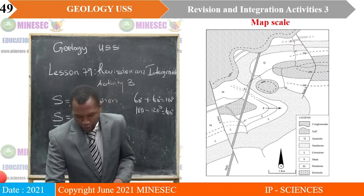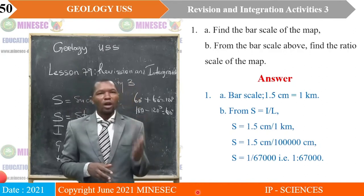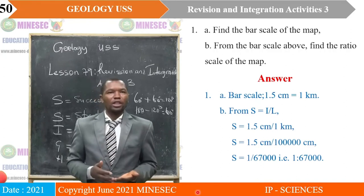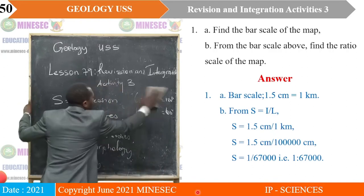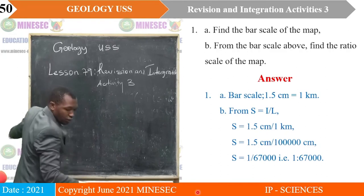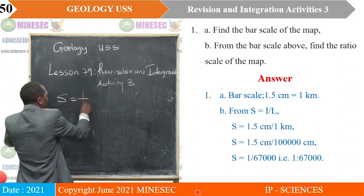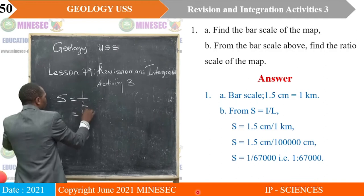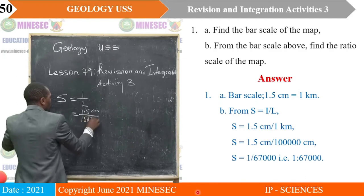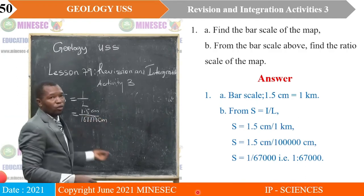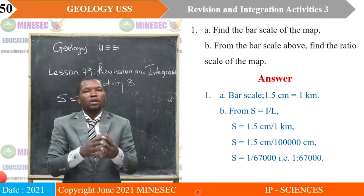From that map, going to the map scale, we look at the bar scale and measure it. The bar scale gives 1.5 centimeters equal to 1 kilometer. For part B, we use the formula S = 1/L. The distance on the map is 1.5 cm and the distance on the ground is 1 kilometer, which equals 100,000 centimeters. Therefore, the scale is 1:67,000.